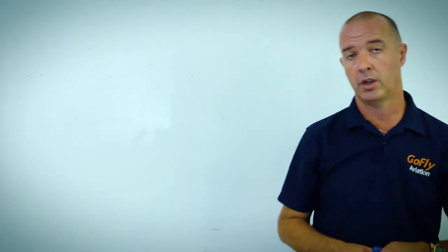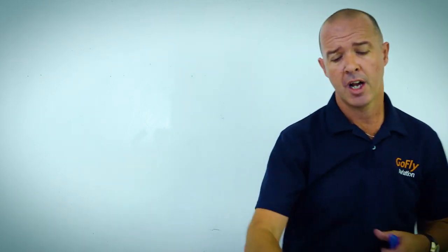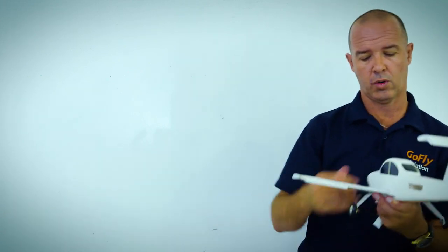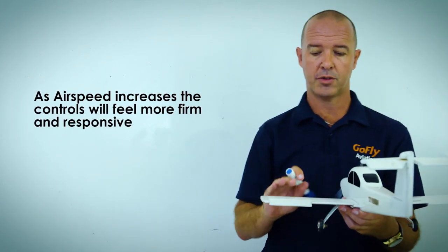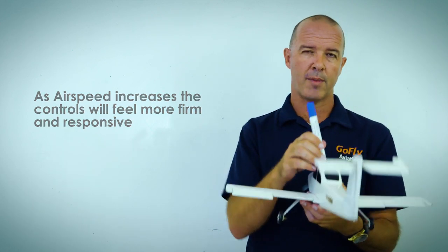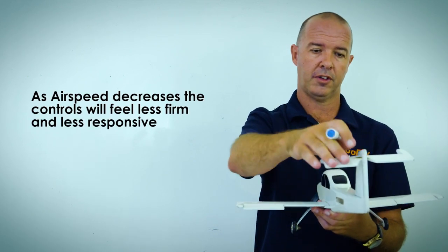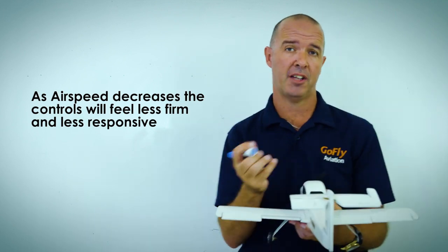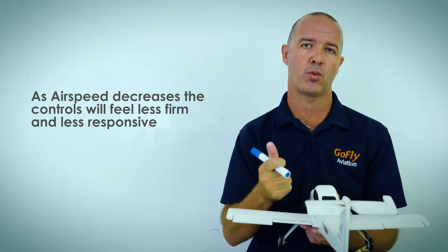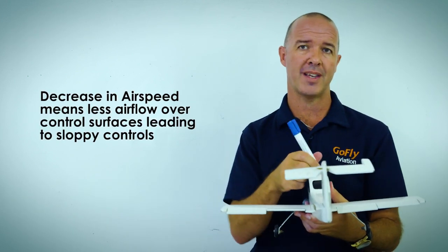The airflow also has an effect on the aircraft. The aircraft designers have designed it so that when we're cruising at our normal cruise speed — around 100 knots in the Sling aircraft — the controls will feel quite firm and responsive, due to the airflow flowing over the control surfaces. However, if we move to a slower airspeed, we're going to have less airflow over the control surfaces, so those surfaces are going to feel less firm and less responsive. We call that sloppy — at slower airspeed, those controls will feel quite sloppy and less responsive.